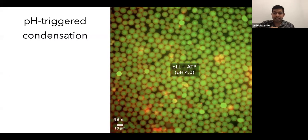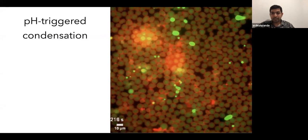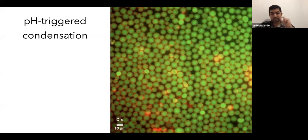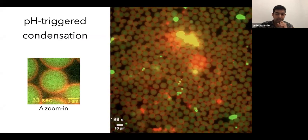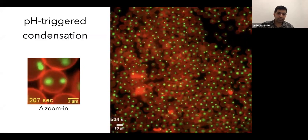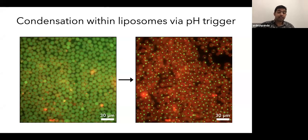So pH triggered condensation. Now we have these hundreds of liposomes. This is one of my favorite movies by the way. They're all at pH four and they have polylysine and ATP inside and they show no condensation. And once I increase the pH outside, you get this condensation process happening across all the liposomes and each of them get one single condensate. You can also see it in a zoom in here. And the process looks very similar to that with the transport mechanism.